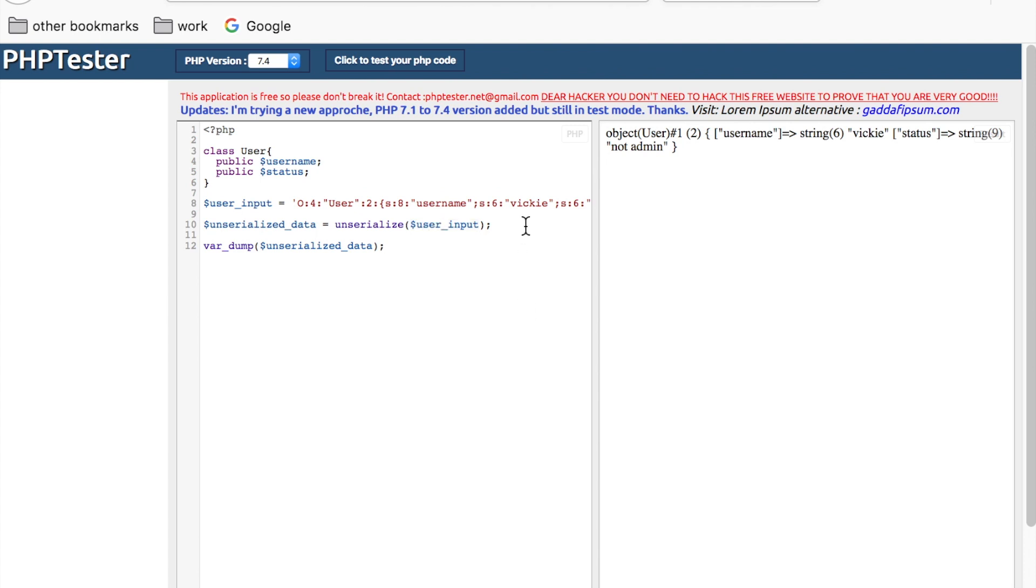One possible way of exploiting this is variable manipulation. For example, you can mess with the values encoded in the serialized string. In this serialized string, you can try to change the value of status to admin, and see if the application grants you admin privileges.